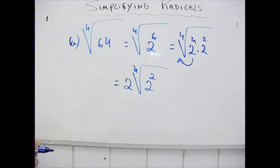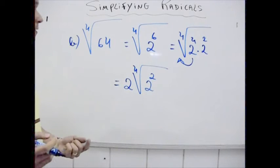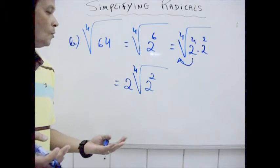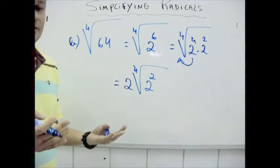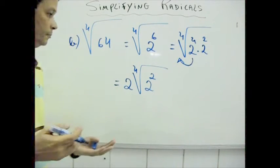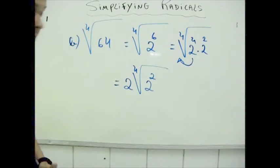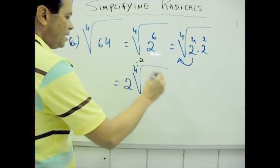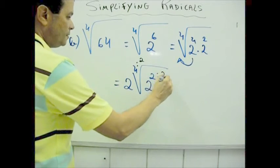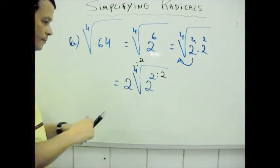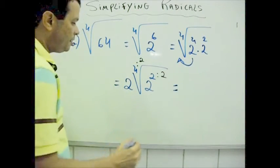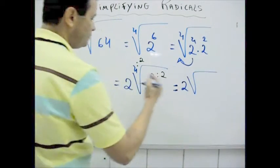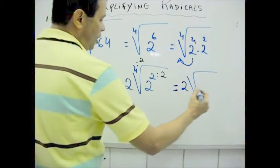Alright, in this case I can simplify more, applying one of the properties of a radical. I can divide by 2 this index and this exponent. We have here 2 times square root of 2.